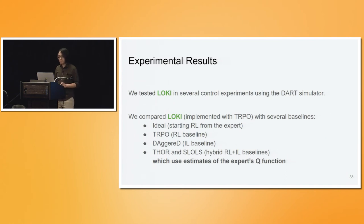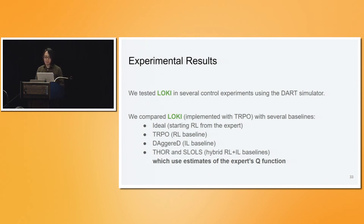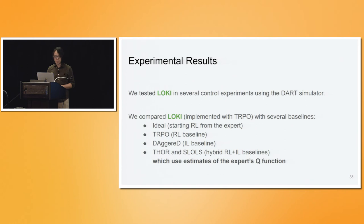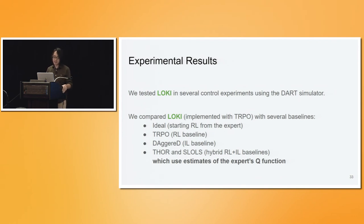To show the performance of LOKI, we tested on some control experiments in a Dart-simulated OpenAI Gym setup, and compared LOKI implemented with TRPO against several baselines: the ideal setting of doing RL starting from the expert policy, a pure RL baseline, a differentiable version of DAgger as an imitation learning baseline, and two hybrid RL+IL baselines that both use estimates of the expert's Q function. Because the expert Q function can only be learned under the expert's distribution, this will lead to some problems, as we'll see.